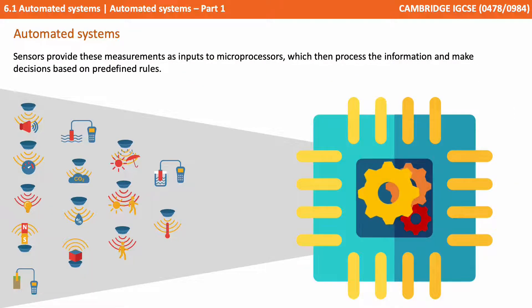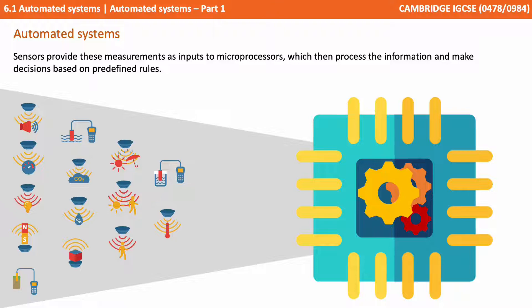Sensors provide these measurements as input to microprocessors which then process the information in order to make decisions based on the readings and predefined rules.